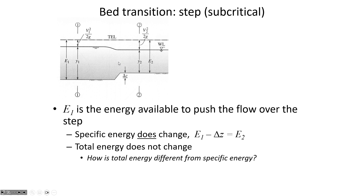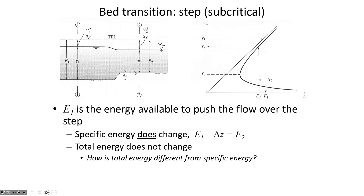Because of this delta z, the specific energy is changing. The energy at 2 is how much energy there was at 1 minus the step elevation. But the total energy doesn't change, because total energy is how much energy there is relative to a datum. If we use the same datum to measure both the water depth and the velocity head at 1 and 2, the total energy hasn't changed even though the specific energy does. Total energy takes into account the delta z, where specific energy is always measuring how much energy there is relative to the bottom of the channel. Here's our specific energy diagram. Let's say that at location 1, conditions were subcritical. We have some initial depth Y1, we find how much specific energy there is, a step up means we're losing specific energy to the magnitude of E2, and then there are two crossover points — one supercritical root, one subcritical root.